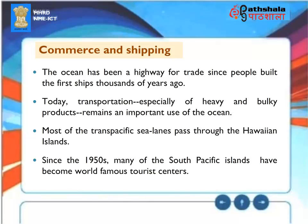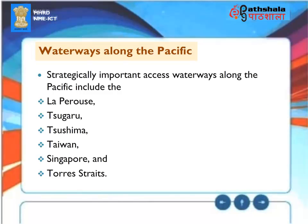Commerce and Shipping: The ocean has been a highway for trade since people built the first ships thousands of years ago. Transportation, especially of heavy and bulky products, remains an important use of the ocean. Most trans-Pacific sea lanes pass through the Hawaiian Islands. Since the 1950s, many South Pacific islands have become world-famous tourist centers. Strategically important access waterways along the Pacific include the La Perouse, Tsugaru, Tsushima, Taiwan, Singapore, and Torres Straits.